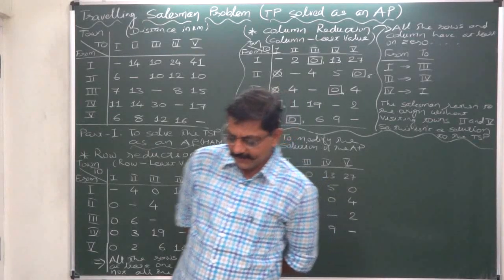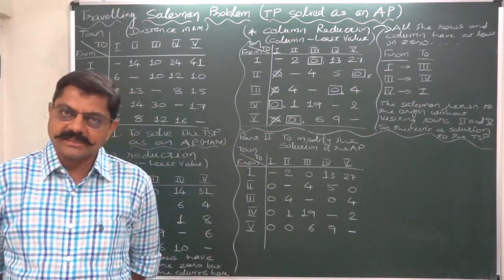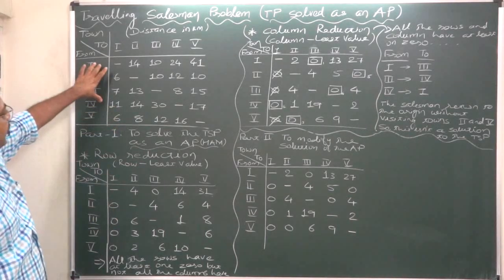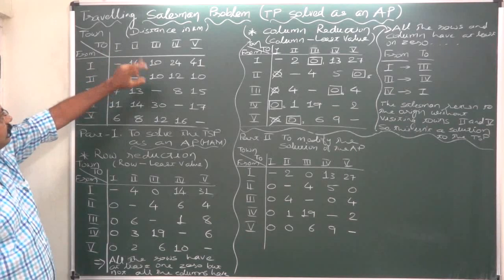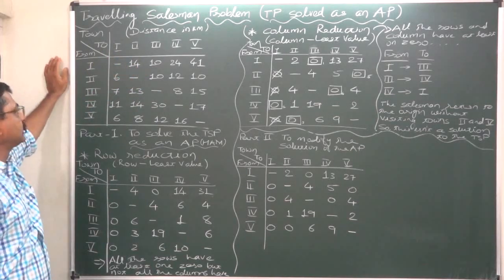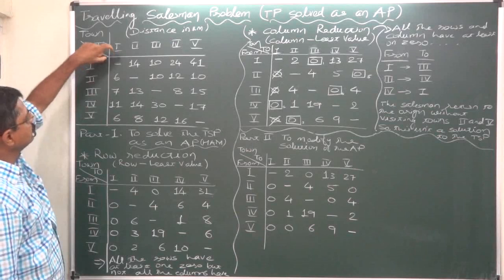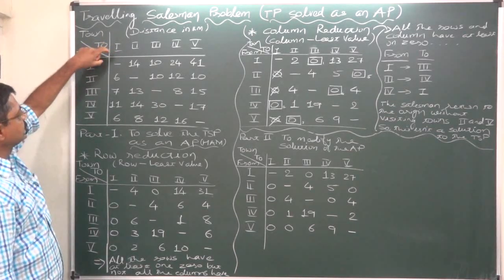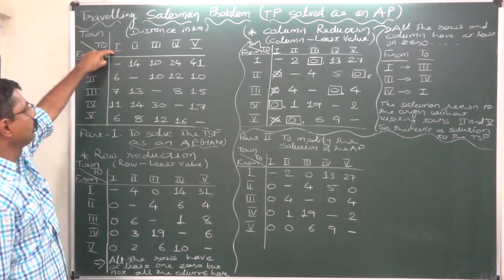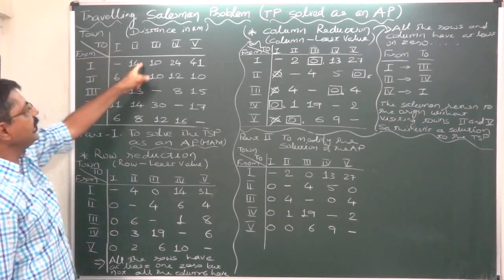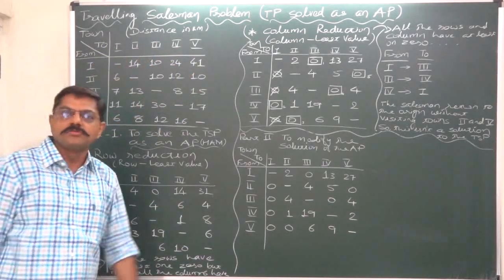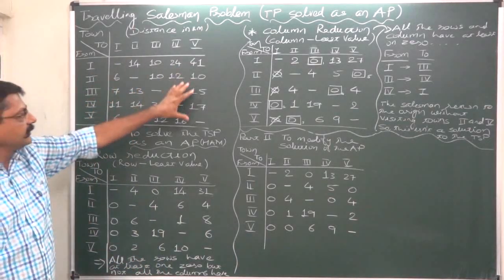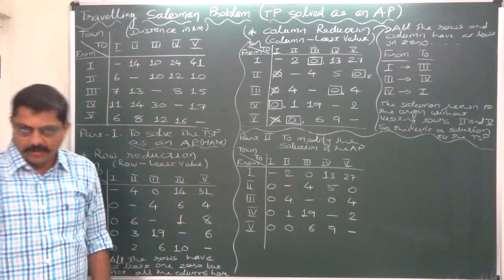Hello and welcome back. Now let's look at a case of the Traveling Salesman Problem. This is the problem where there are five towns and the salesman needs to start the journey from town one, treated as the origin or starting point. The salesman needs to return again to town one only after visiting all other four towns once, covering the minimum distance. These are the distances in kilometers.